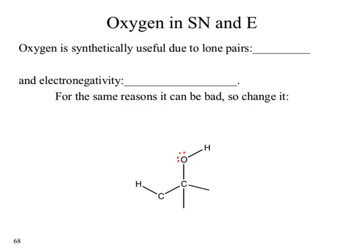The lone pairs could act as a base by donating electrons to hydrogen. They could also act as a nucleophile. So a new functional group — our alcohols — could act as nucleophiles and as bases. Due to oxygen's electronegativity, it can withdraw electrons from the carbon, making the carbon more positive and making the alcohol functional group an electrophile.